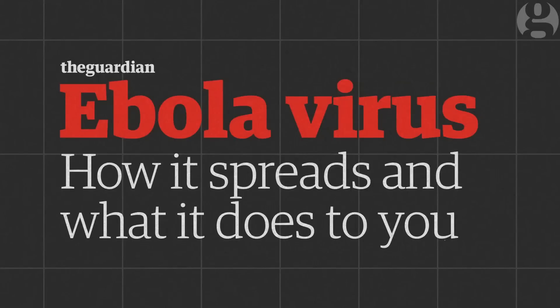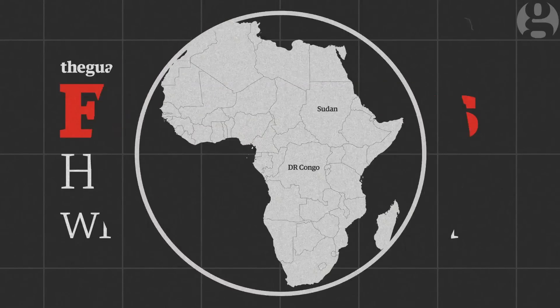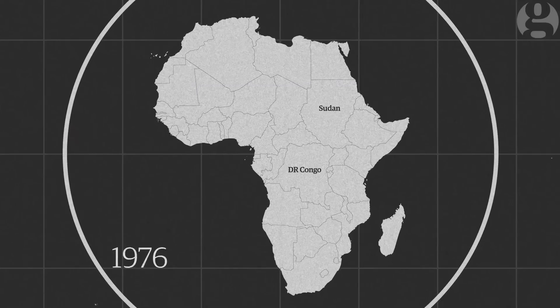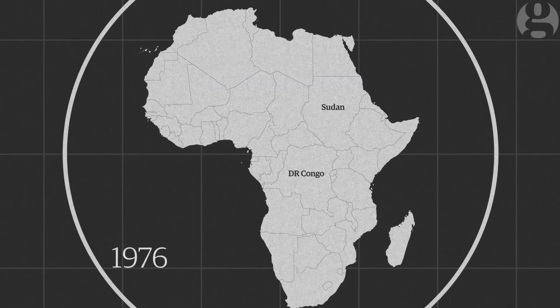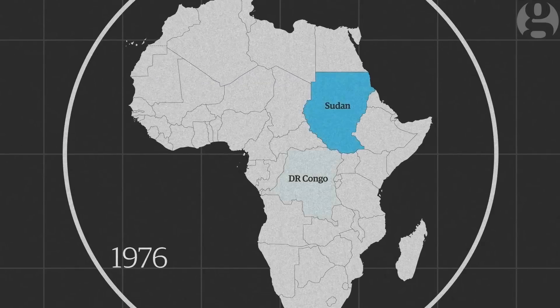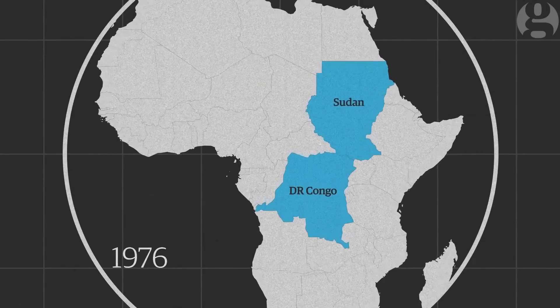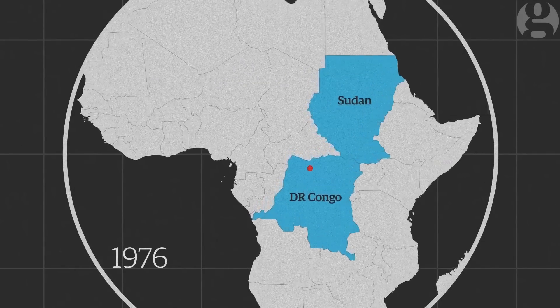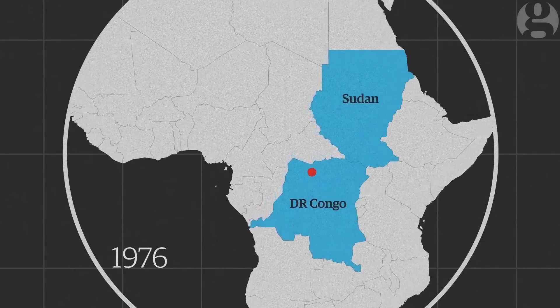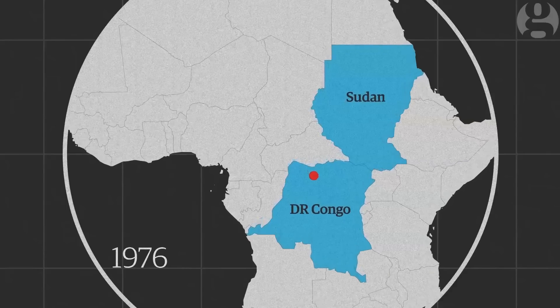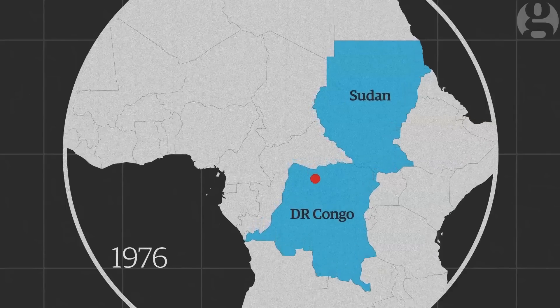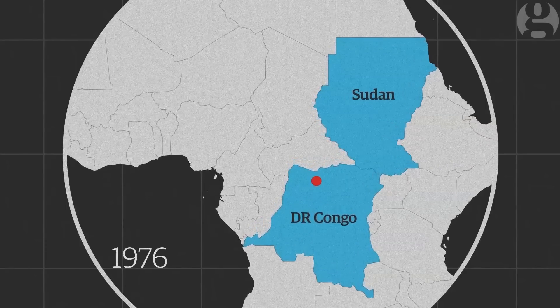The Ebola virus was first recognised in 1976 after two near-simultaneous outbreaks in Sudan and the former Zaire. The bug was named after a small river in the northwest of what is now the Democratic Republic of Congo.